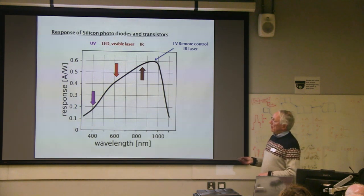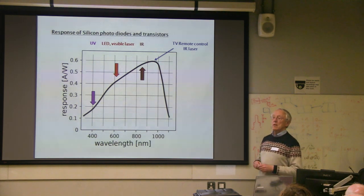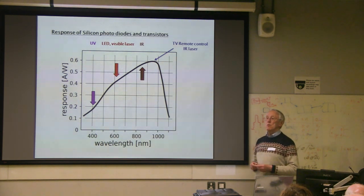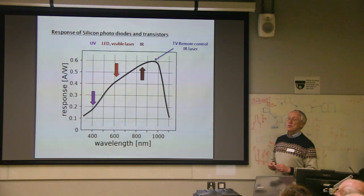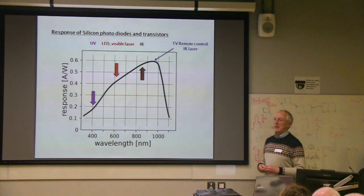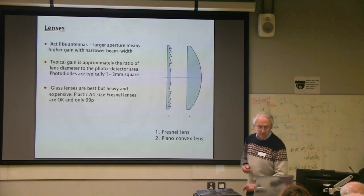If you want to work in the UV, silicon photodiodes work reasonably well, but you can also fall back on the old photomultiplier tubes that people used years ago. I'll show an example of gear that uses one of those later.